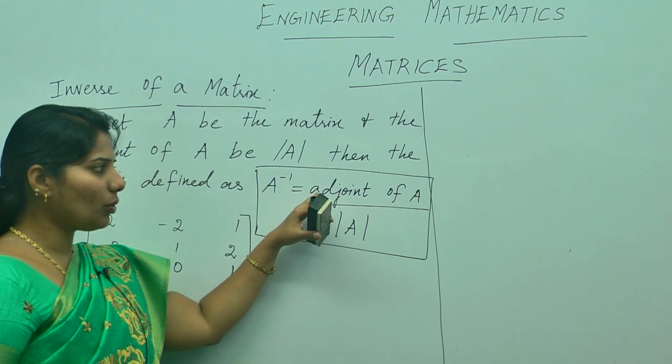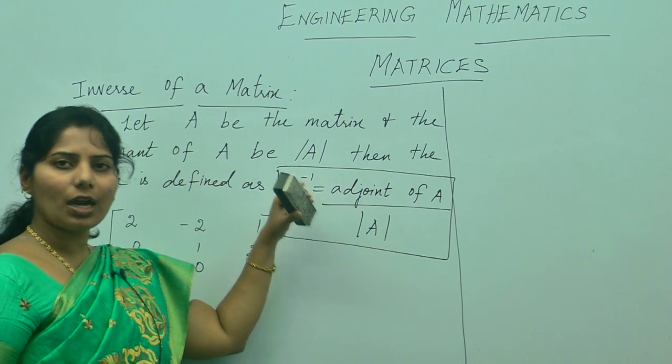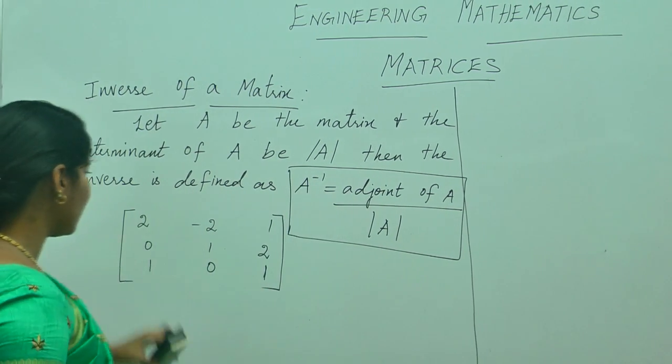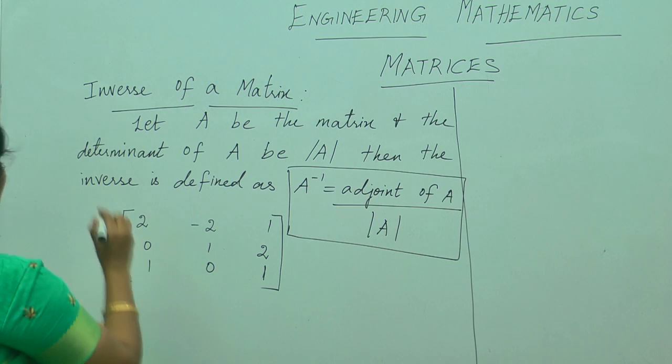What is adjoint of A? It is the transpose of the cofactor matrix.